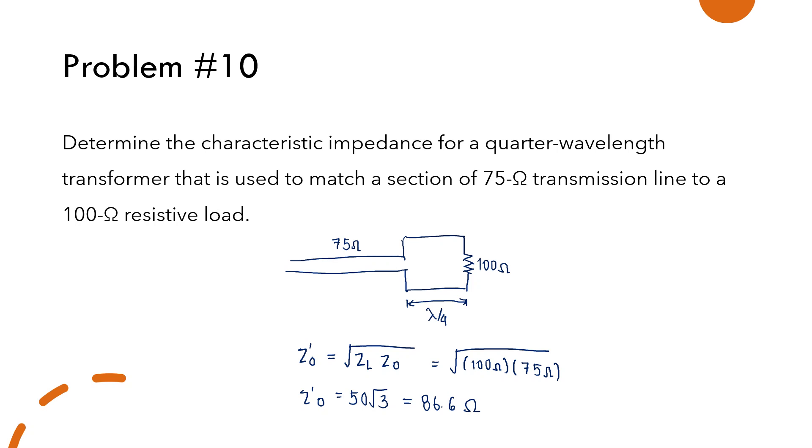It's very simple. We just have to memorize this formula for the characteristic impedance of the quarter-wavelength transformer.